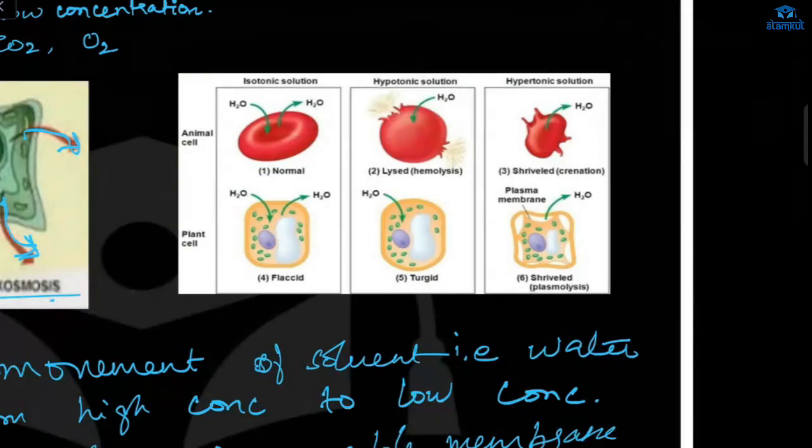Now let's see three kinds of solution. We have isotonic solution. This is normal. The water content will get outside the cell, so the concentration is maintained. This is what we call isotonic solution. This is animal cell and this is plant cell. In the case of plant cell, this kind of condition is called flaccid.